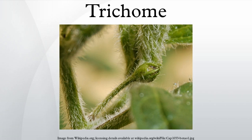Trichomes, from the Greek meaning hair, are fine outgrowths or appendages on plants, algae, lichens, and certain protists. They are of diverse structure and function. Examples are hairs, glandular hairs, scales, and papillae.